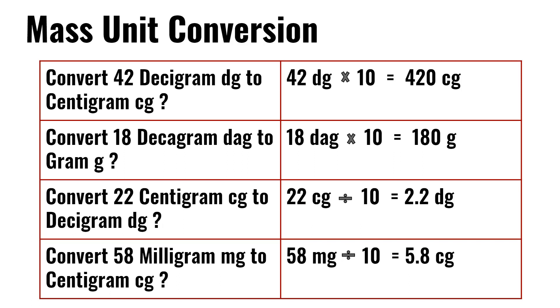Convert 58 milligrams to centigrams: 58 milligrams divided by 10 is equal to 5.8 centigrams.